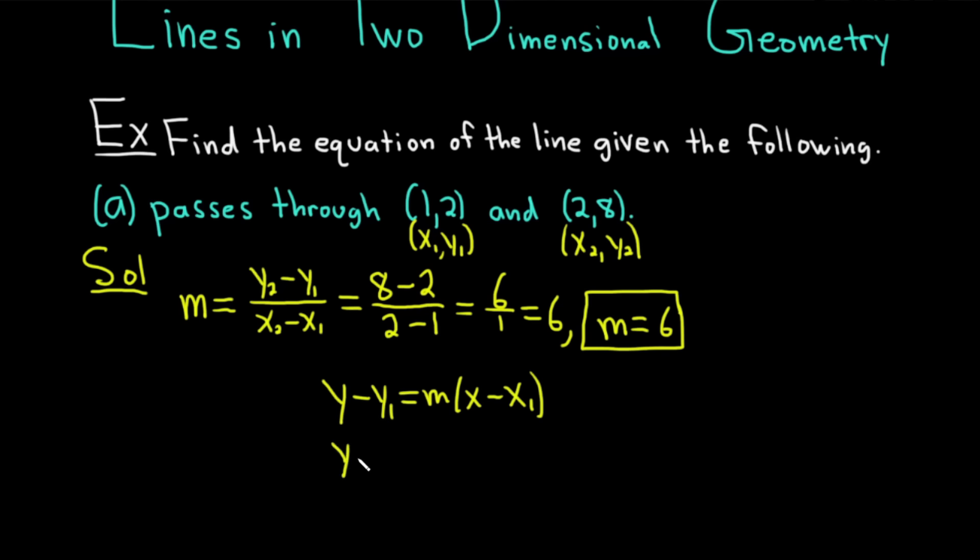So this is y minus, so y1 is 2. It's really good we labeled it, right? I had to look, so it's 2. And then what was m? Well, we put it in a box. So that's super convenient. That was 6. Good stuff. Parentheses x, and then x1 is 1. Let's just do like a little mental check. y1 is 2, m is 6, x1 is 1. So all is good.